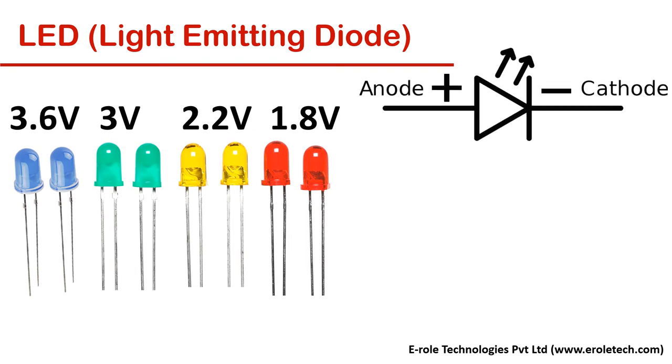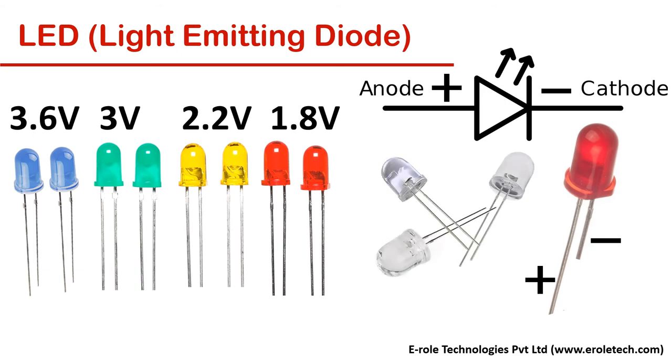This is the symbol of LED. In LED, flat side indicates the cathode and round side indicates the anode. LEDs are available in two forms, colored and transparent.